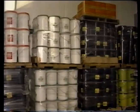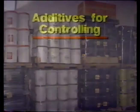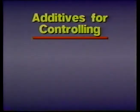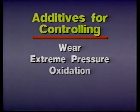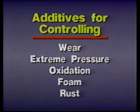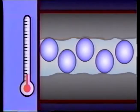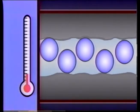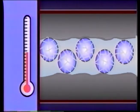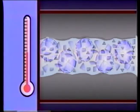As industry's use of hydraulics has expanded over the years, a variety of chemical additives have been developed to handle problems of excessive wear, extreme pressure, oxidation, foaming, and rusting. Several kinds of anti-wear additives are available. One common type works by increasing the lubricity of the fluid — the molecules in the additive form a film which helps to keep the surfaces apart. Unfortunately, this kind of additive has a limitation: it tends to break down at high temperatures.